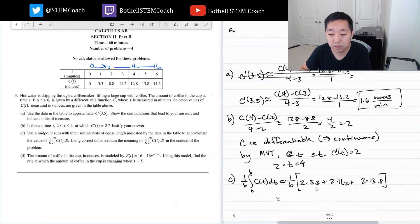I can't use a calculator on this, so this is super annoying. I can factor out the two, so that's one-third times 5.3 plus 11.2, that's 16.5, plus 13.8 is 30.3. And that's equal to 10.1.